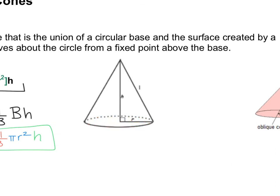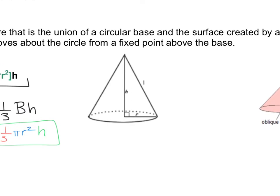This right here we call a right cone, because there's a right angle. H is our height. So that means that h is perpendicular to r, meaning that it's a right cone.